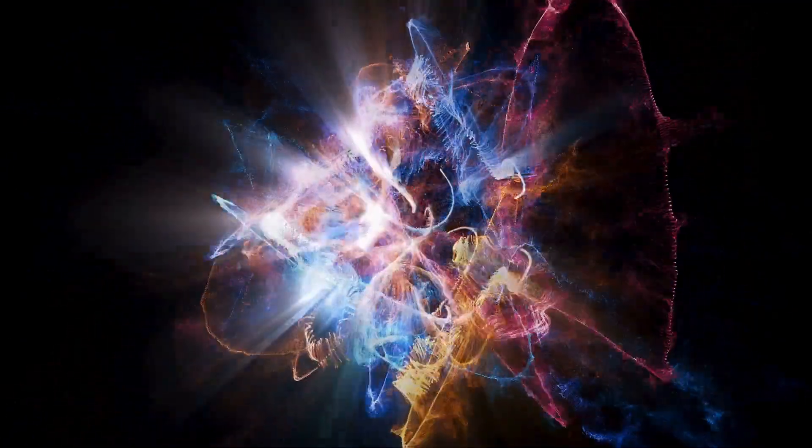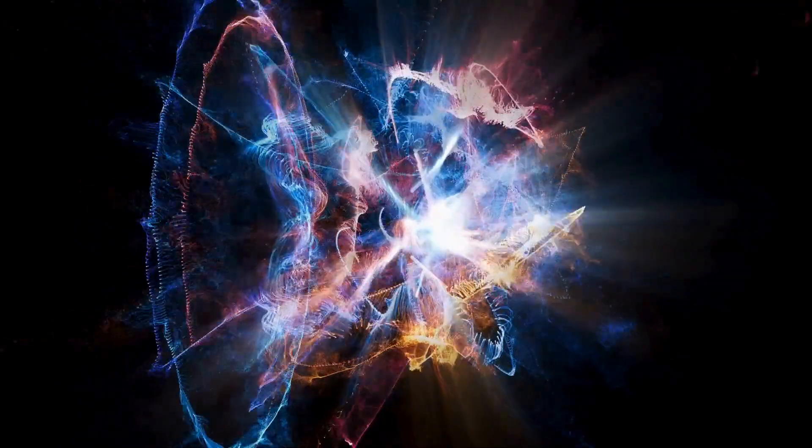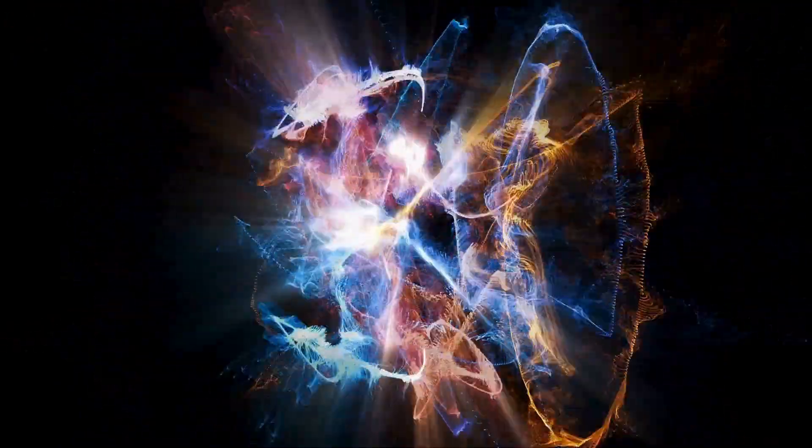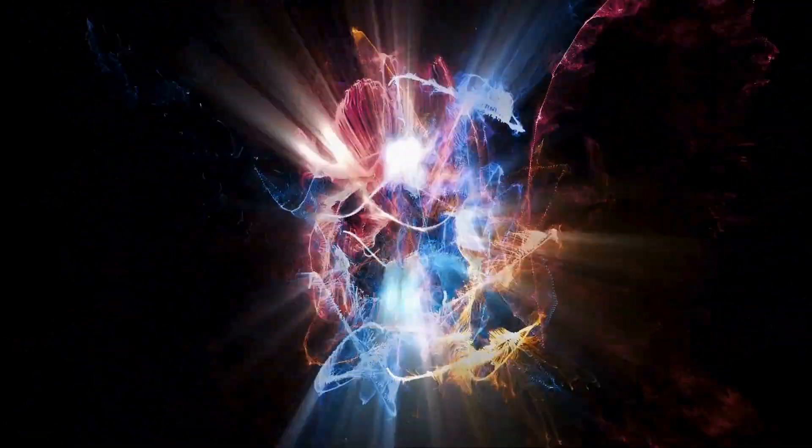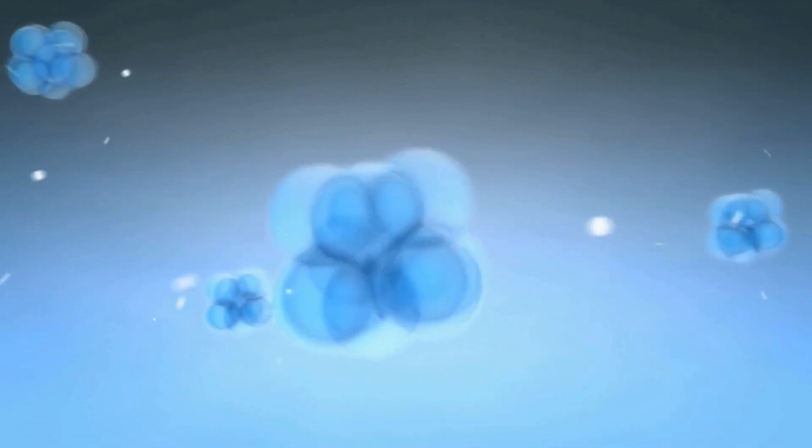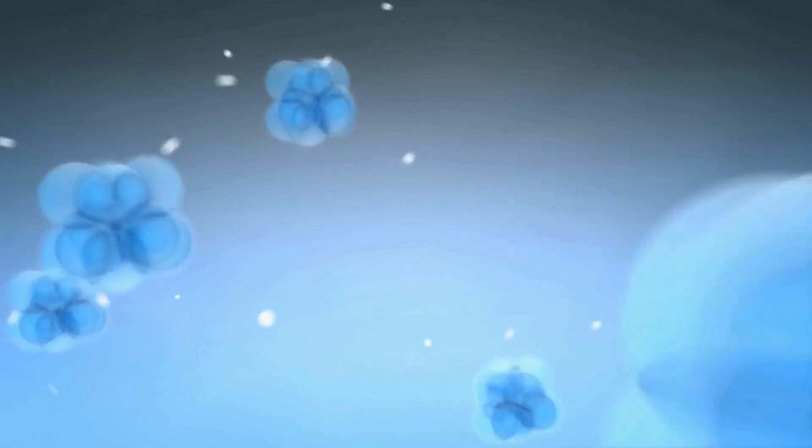Let's start with the basics. Atoms are indeed mostly empty space. The atomic nucleus is tiny, and electrons orbit it in a space that's enormous on the atomic scale. But this space isn't empty in the way you might think. It's not like a room full of air you can walk through. This emptiness is actually full of possibilities.